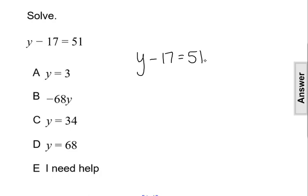So we need to do the inverse operation of subtracting 17, and we're going to add 17. But if we do that to the left side of the equation, we have to make sure we also do it to the right. We have to do the same thing to both sides of the equation.